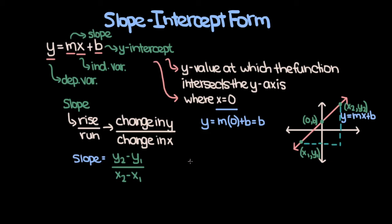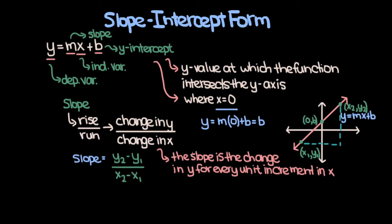The way I like to understand the slope is the following: the slope is the change in y for every unit increment in x. So every time we increment our x by one unit, we generate a change in y on the line, and that change in y is equal to the slope.